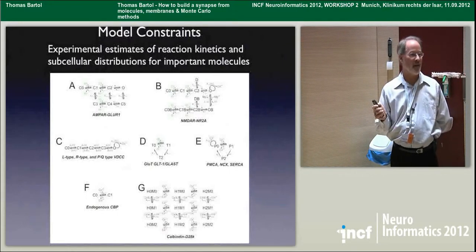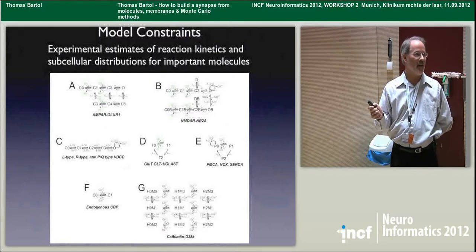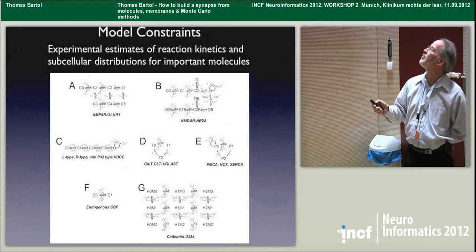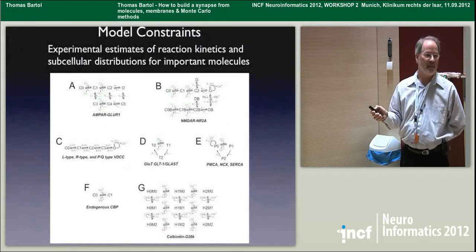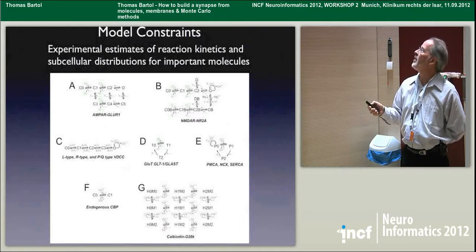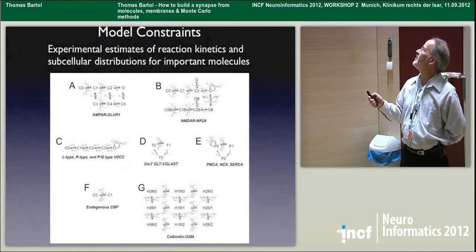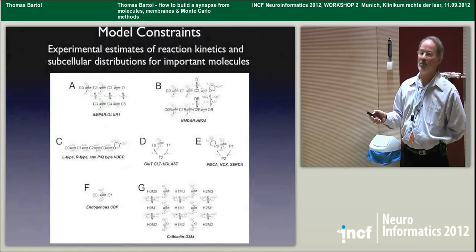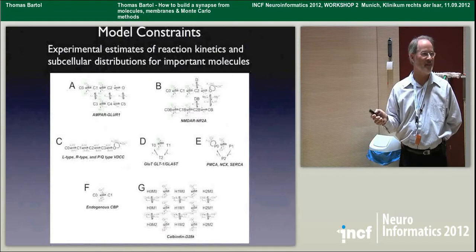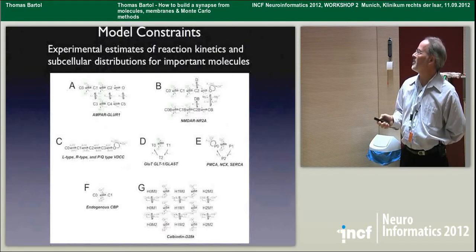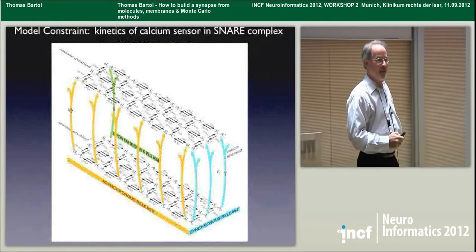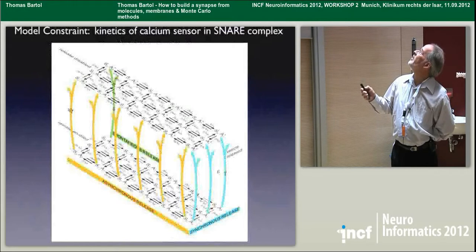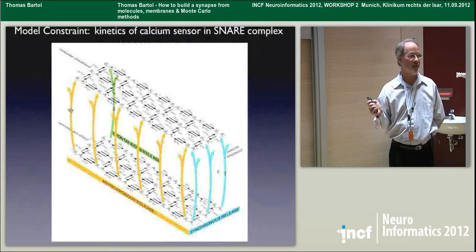We then need the constraints of all the reaction pathways and chemical kinetics for all the different molecules. We have GluR1-type AMPA receptors, N2RA and B-type NMDA receptors, LRPQ-type voltage-dependent calcium channels, GLT1 and GLAST glutamate transporters, PMCA, NCX, and SERCA pumps, endogenous calcium binding proteins of some generic type, and specific calcium binding proteins such as Calbindin D28K. We also have a chemical kinetics scheme and kinetic rate constants for the calcium sensor in the SNARE complex that results in release of neurotransmitter.